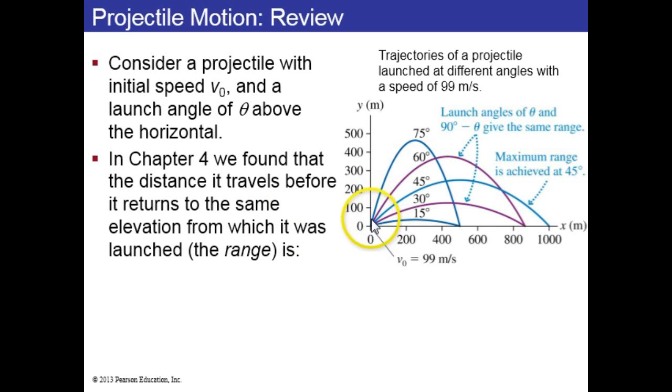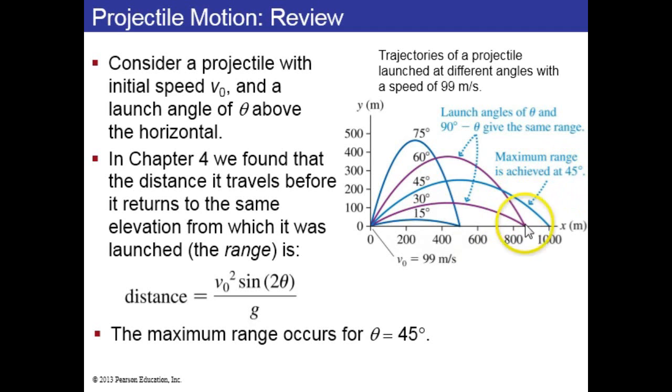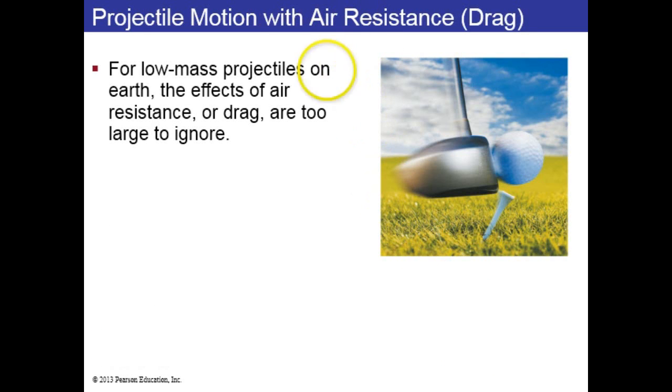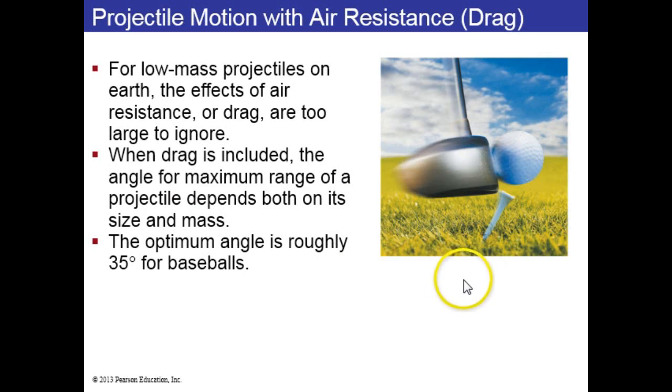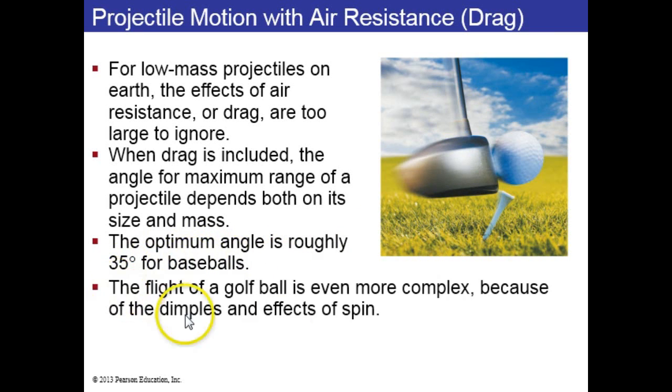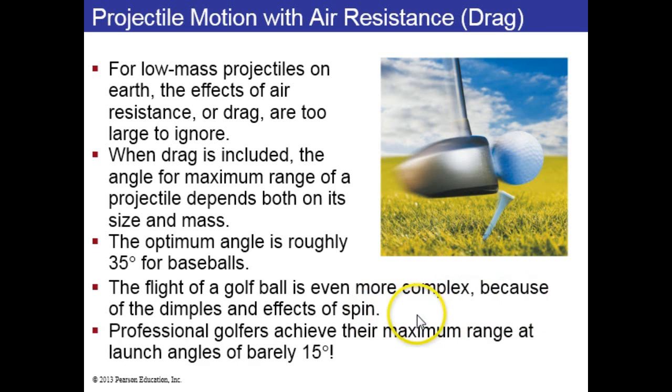If you have different launch angles above the horizontal, you get these different parabolas. We found that the range, the distance for an object launched at some angle that lands at the same vertical distance, is given by this equation and has a maximum at theta equals 45 degrees. Now, all of this assumes that there's no air resistance. If you introduce air resistance, then the angle for maximum range depends on the size and mass of the object. Numerical simulations show that the optimum angle for a sphere, like a baseball, is something less than 45, something like 35 degrees. A golf ball is not a sphere because it has all the little dimples on it, and also it can be spinning, so professional golfers achieve their maximum range at launch angles as low as 15 degrees.